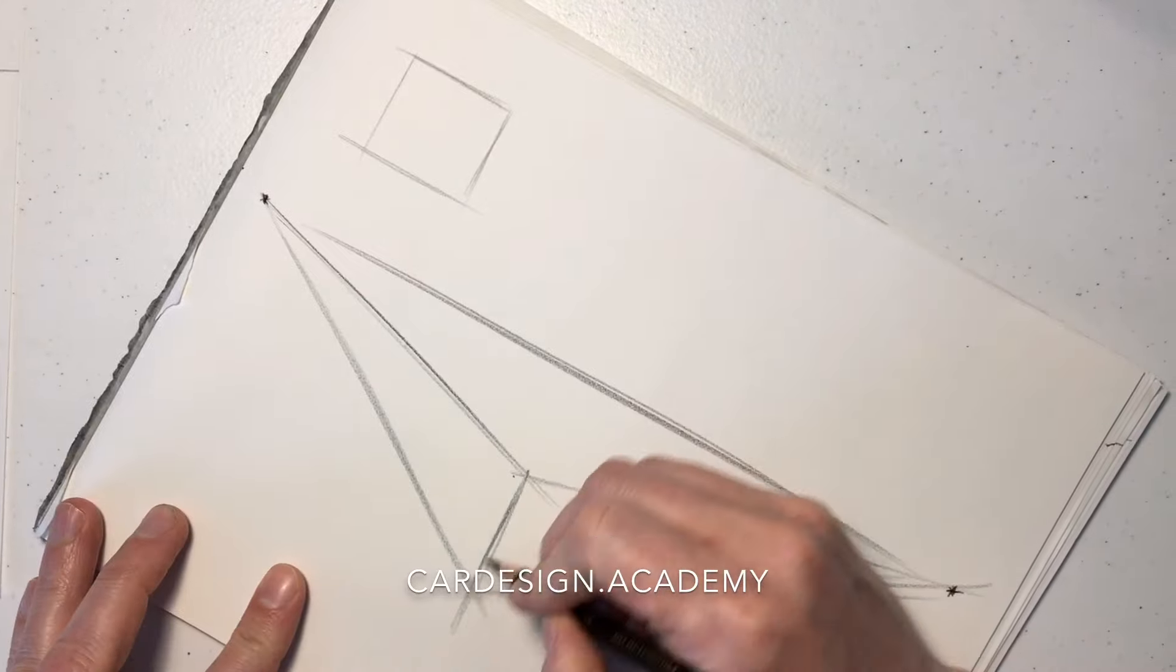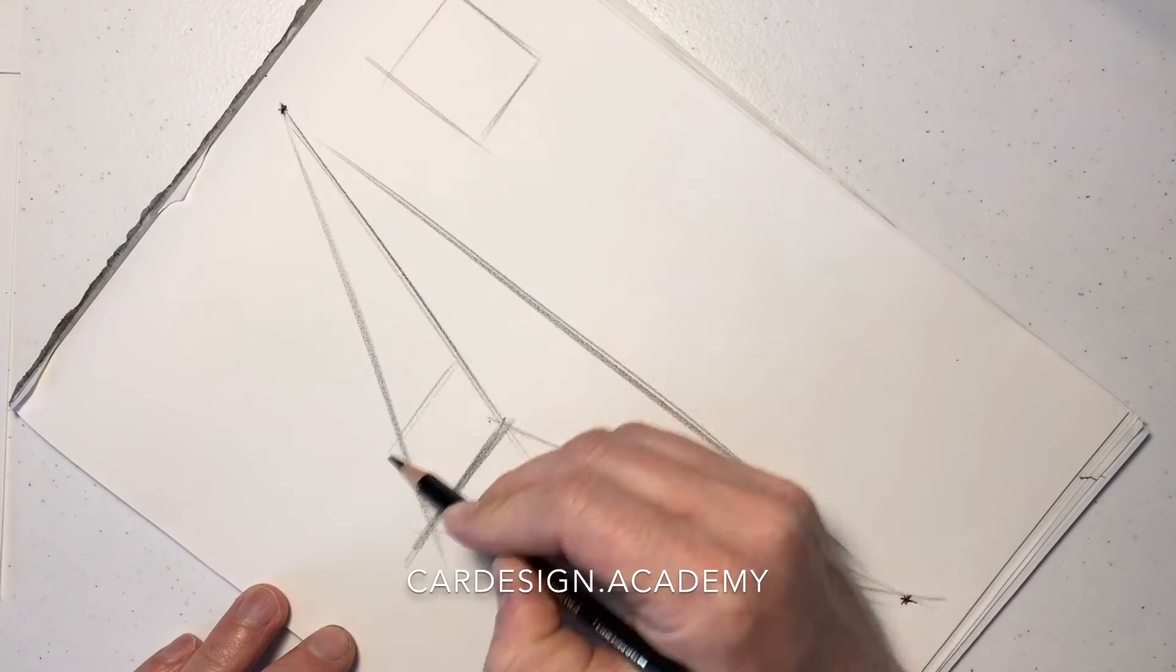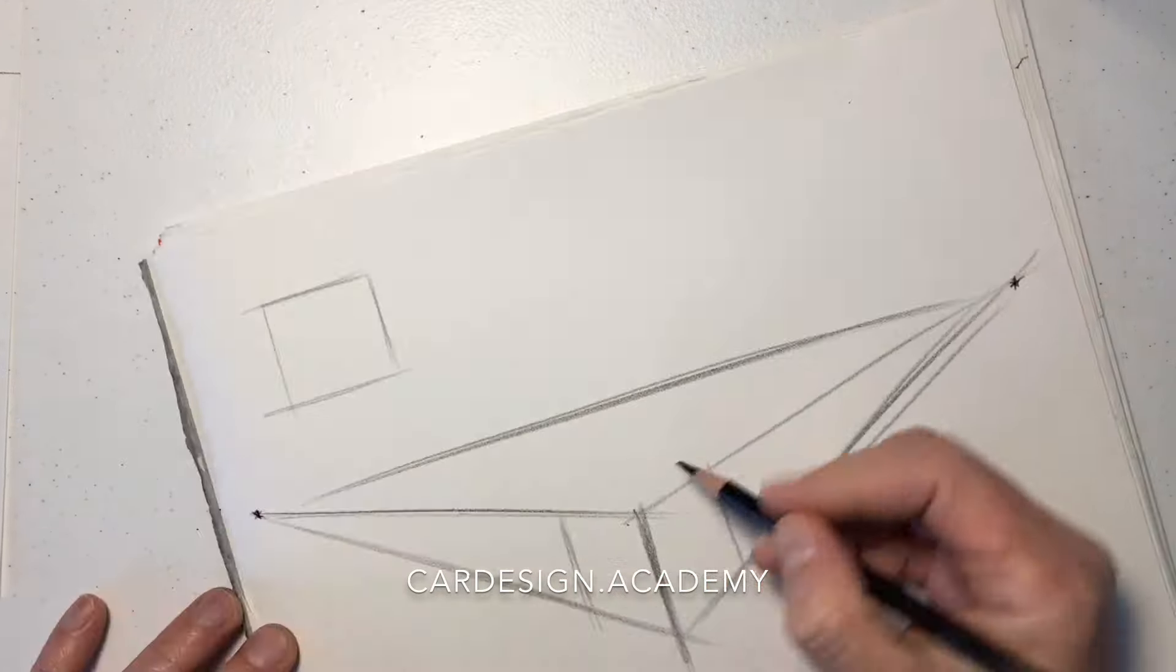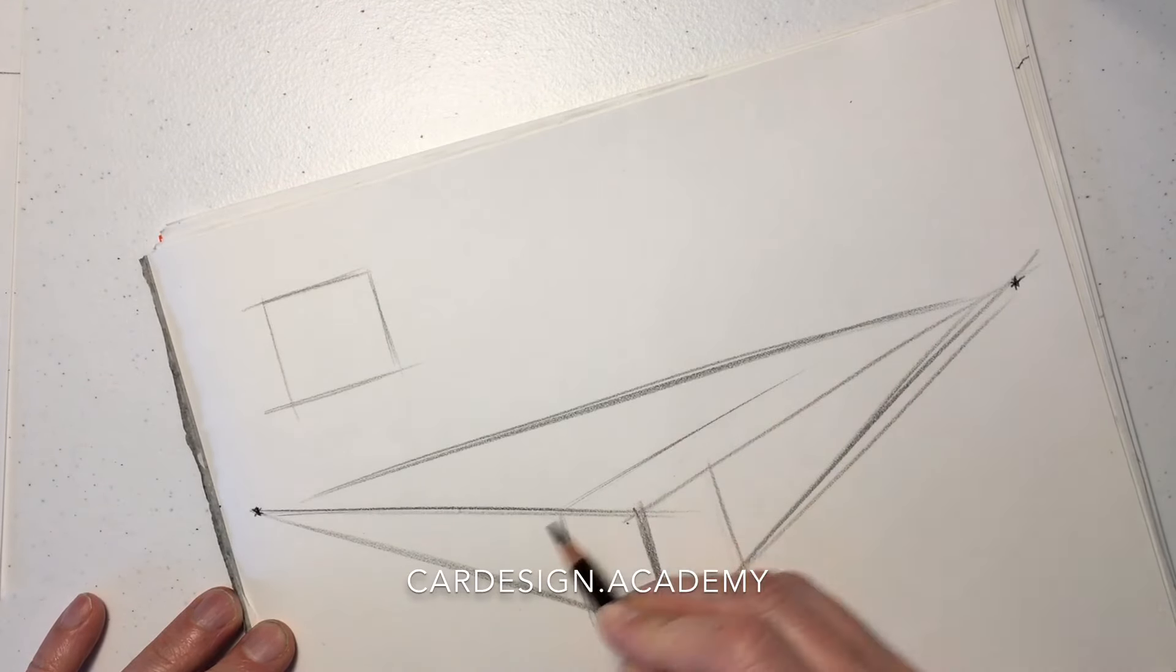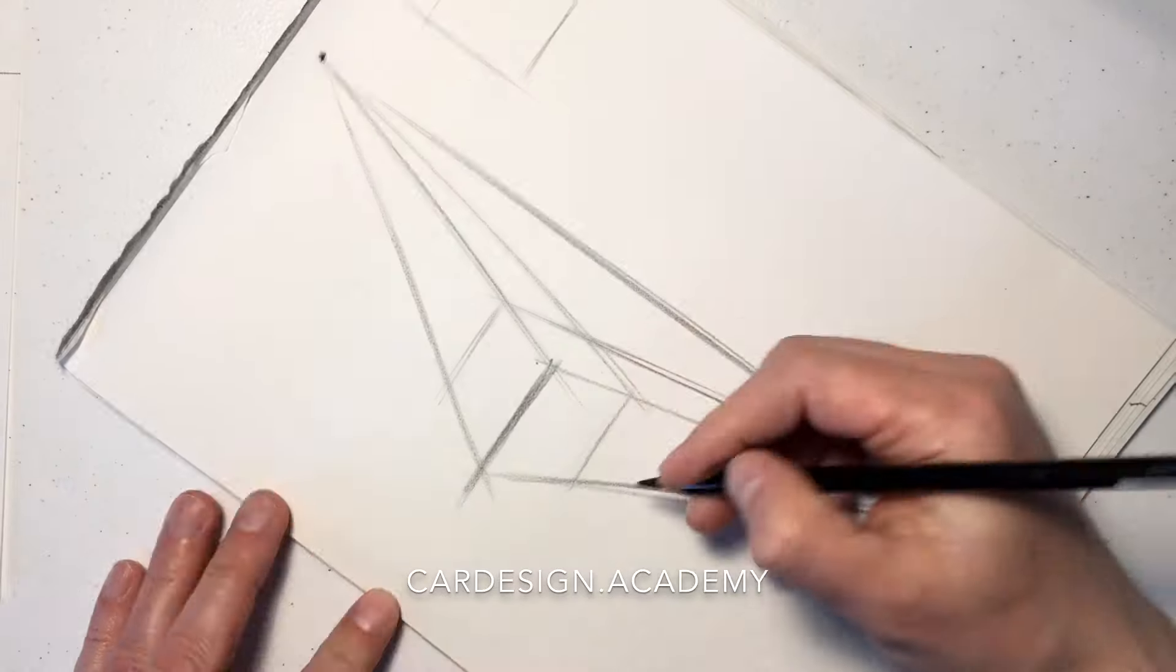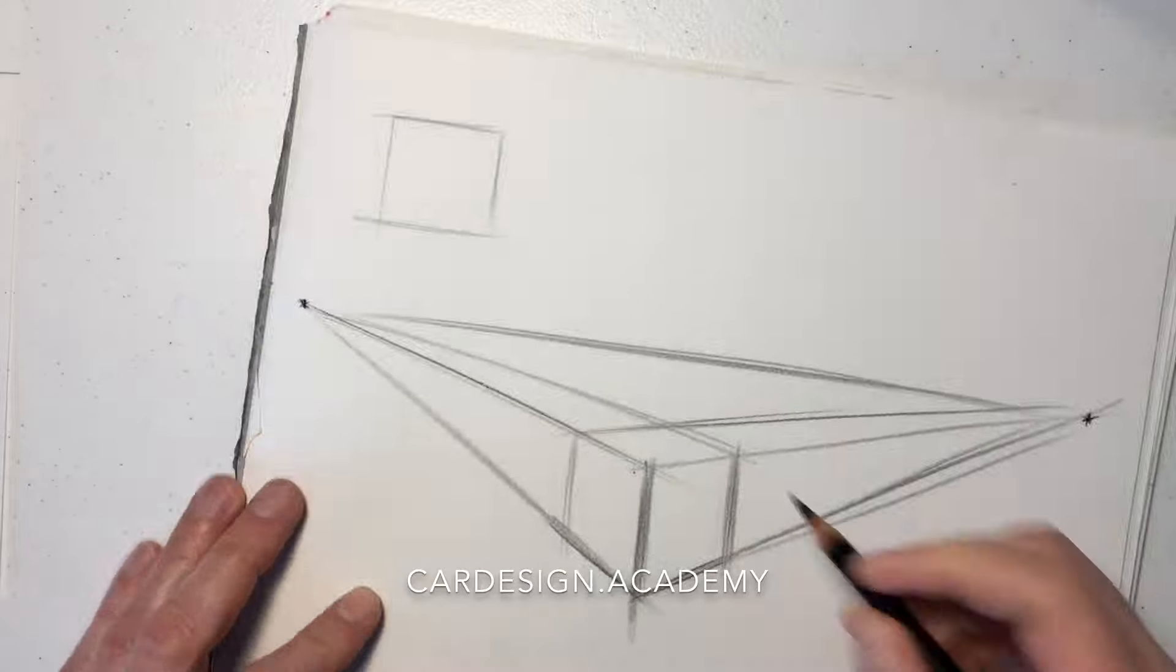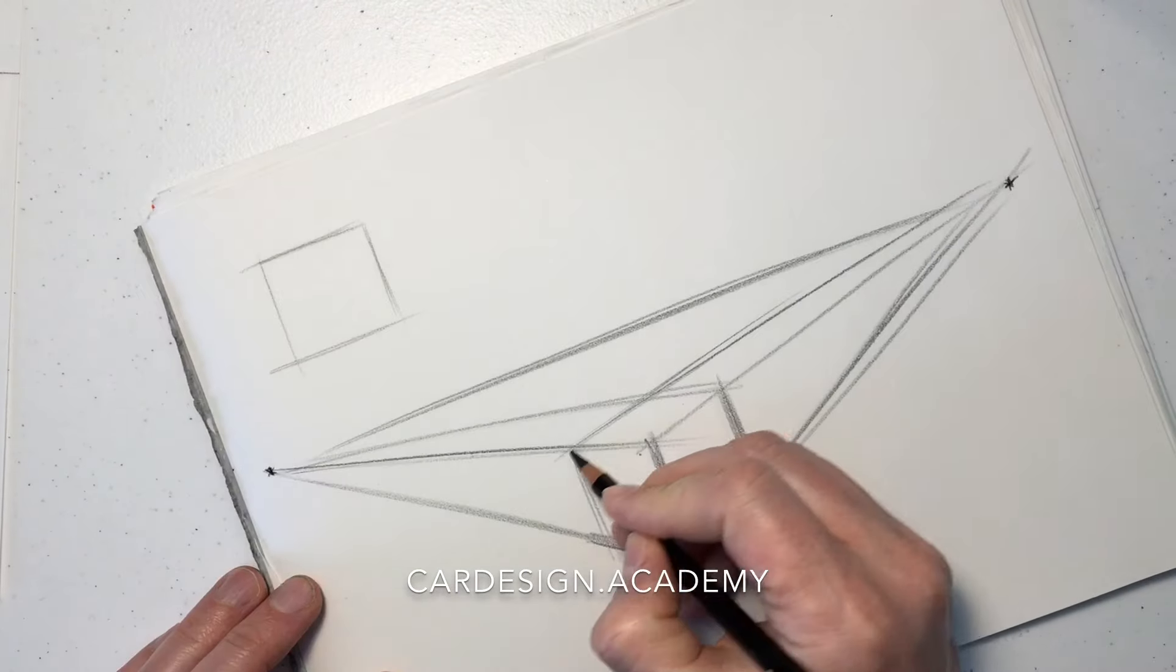The vanishing points represent where parallel lines disappear at the horizon. And so we're just going to keep connecting all the sides of the cube to those vanishing points. That's a basic perspective cube.